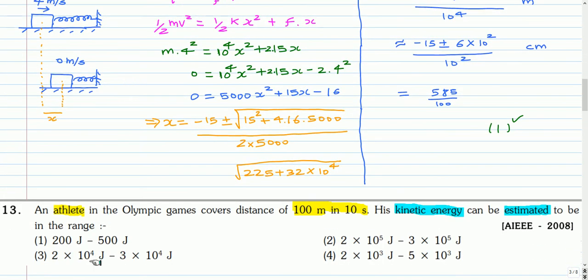This is the next question. An athlete in the Olympic Games covers a distance of 100 meters in 10 seconds. His kinetic energy can be estimated to be in the range?